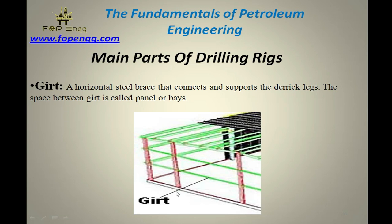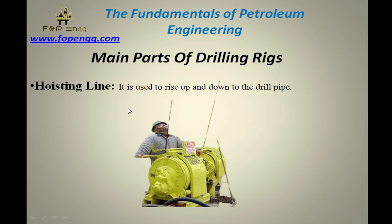Hoisting line — as mentioned previously, the hoisting line is basically used to transfer material from one place to another. It is installed at the rig floor and is used to raise and lower the drill pipe. The main purpose of the hoisting line is to raise and lower the drill pipe.